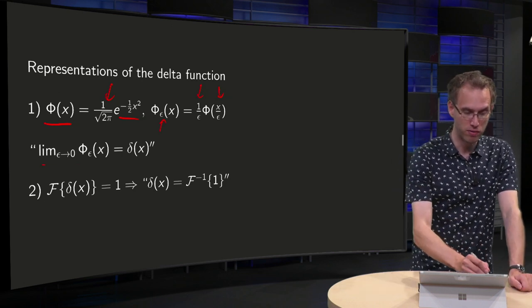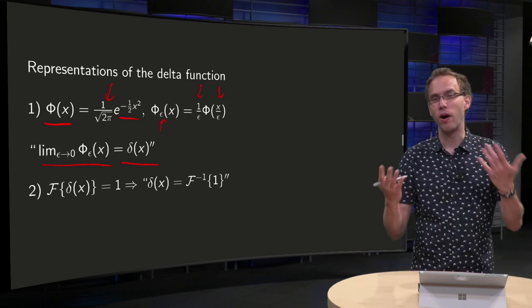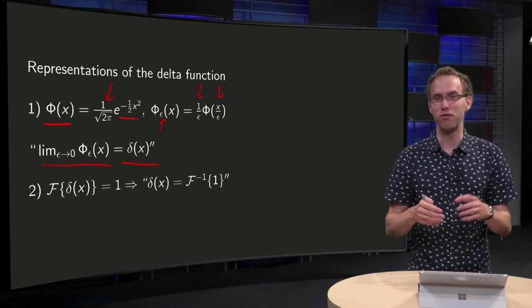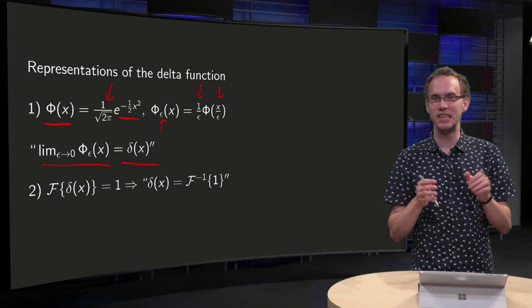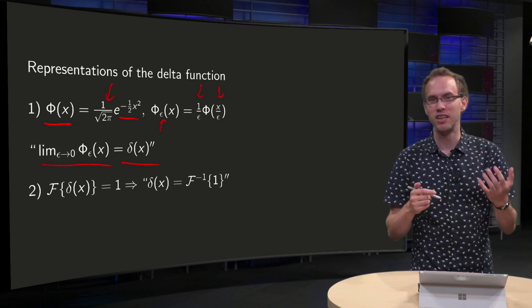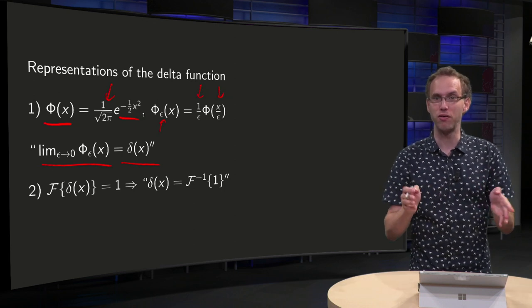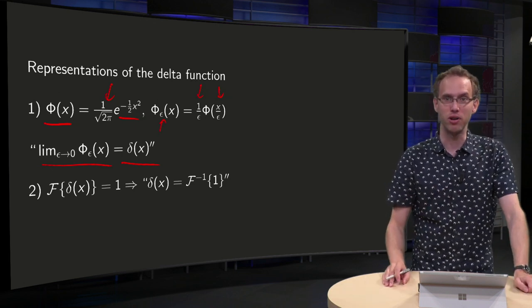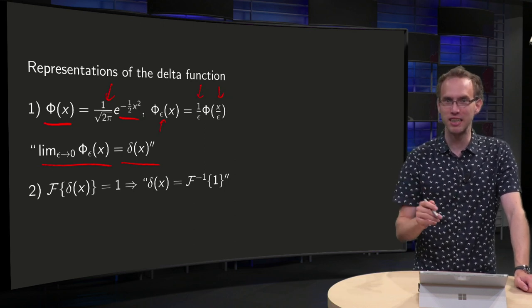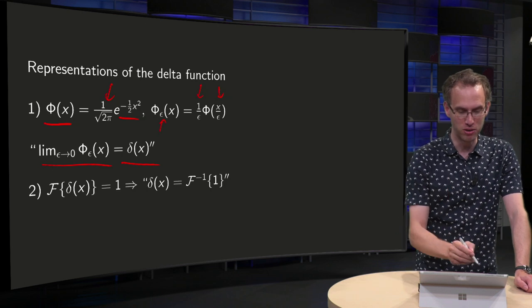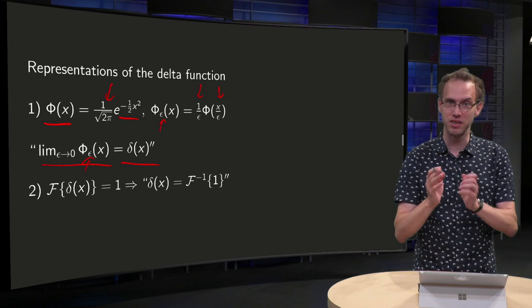So we can say limit ε to zero of φ_ε(x) equals δ(x). I put this between quotes, because for physicists this is fine, but strictly speaking for a mathematician, he doesn't really like that, because your delta function is not really a function, because it's zero everywhere and infinity at the origin. So mathematicians probably won't like this, but for physicists you are fine, you just take the limit of ε to zero for your φ_ε(x) and then you get your delta function.